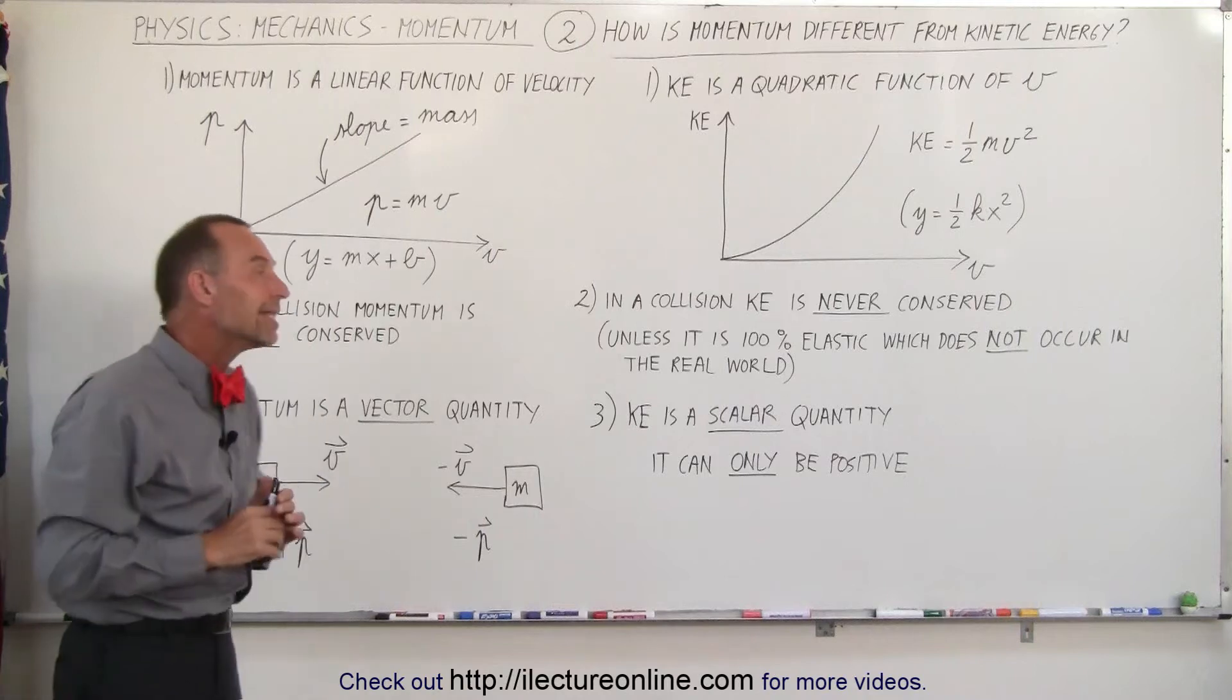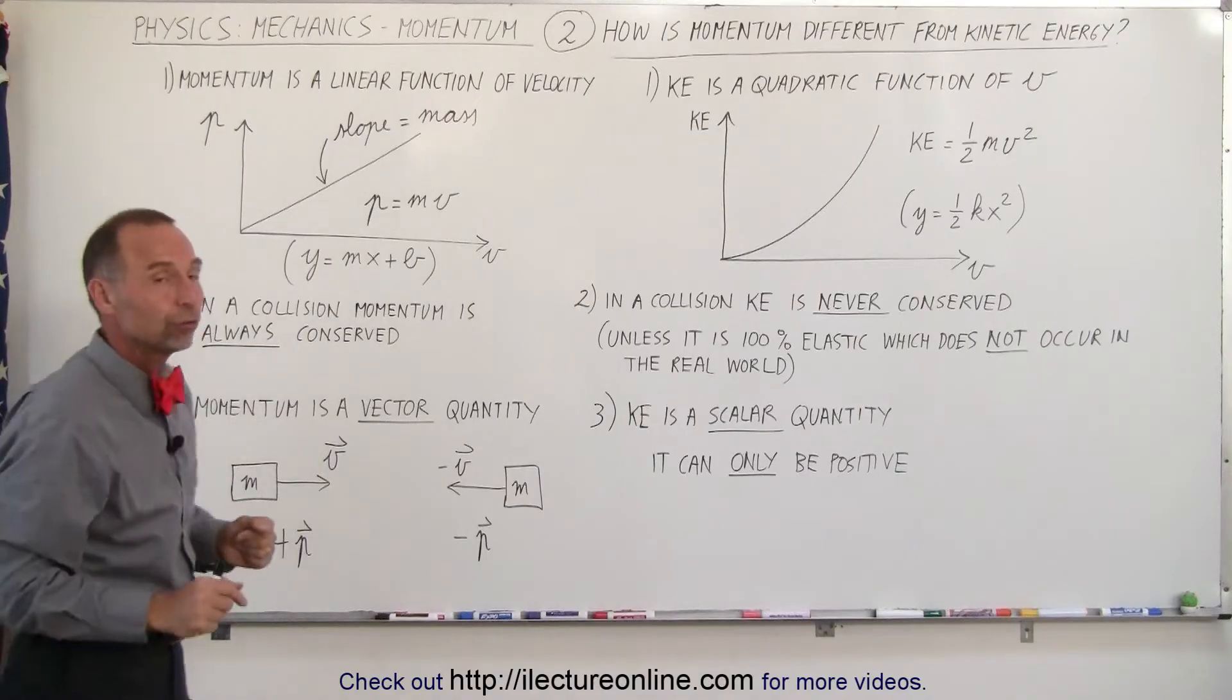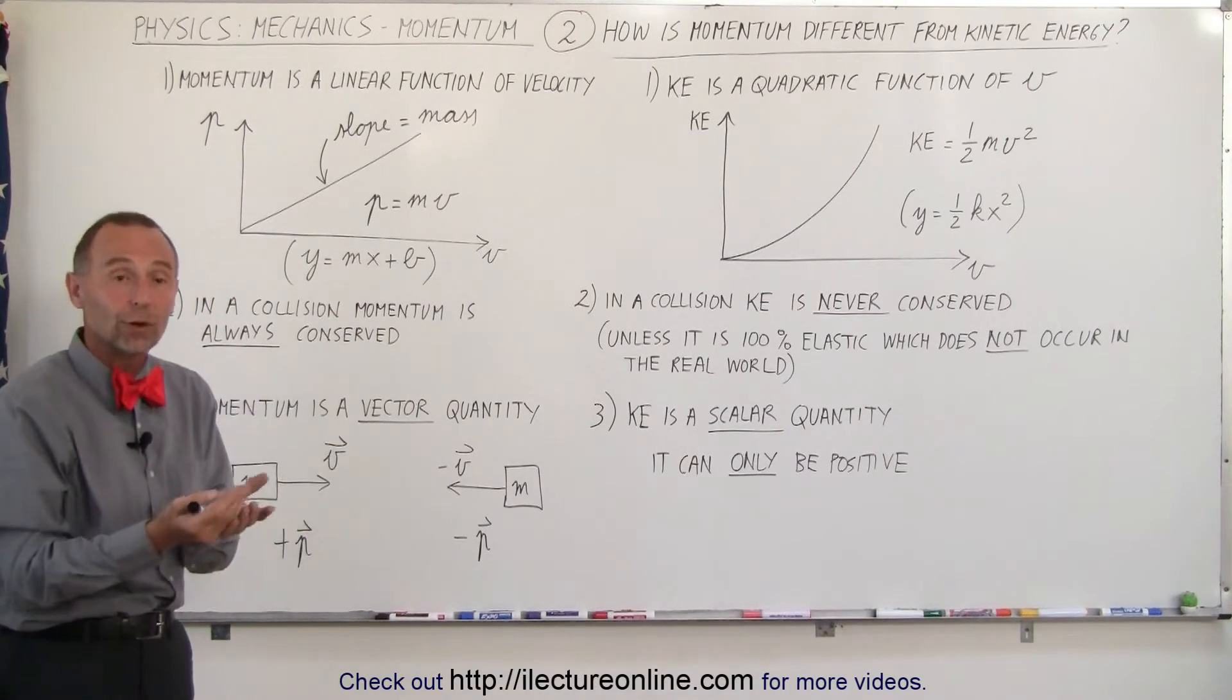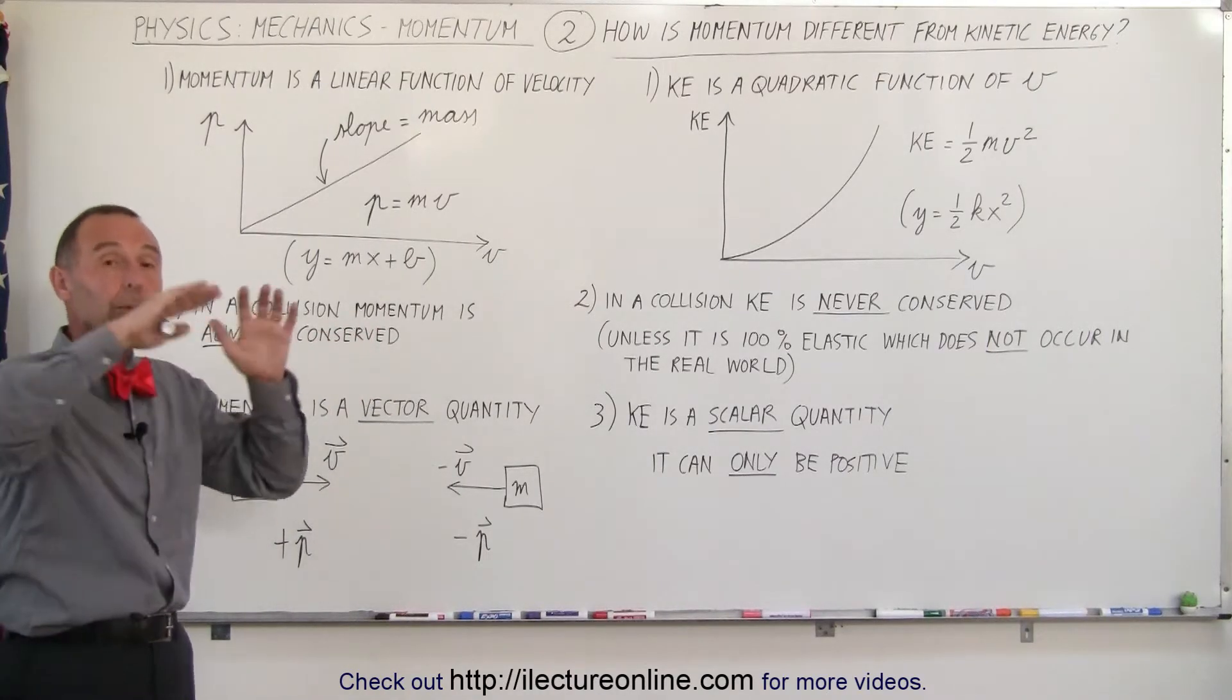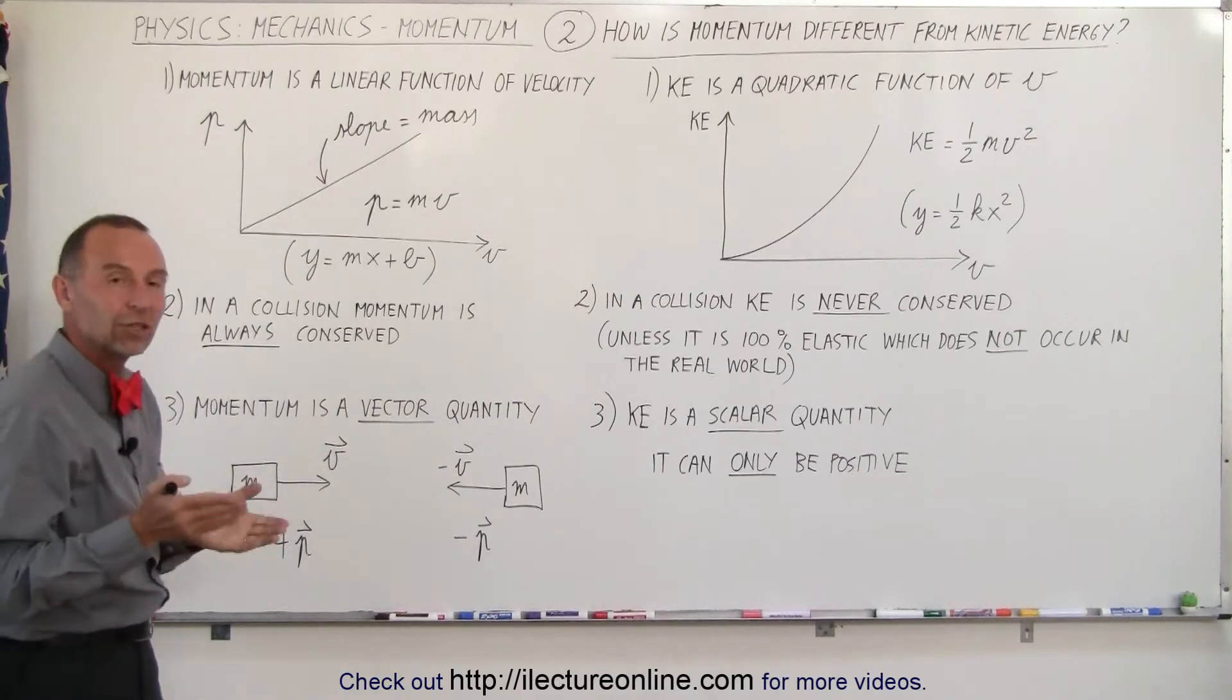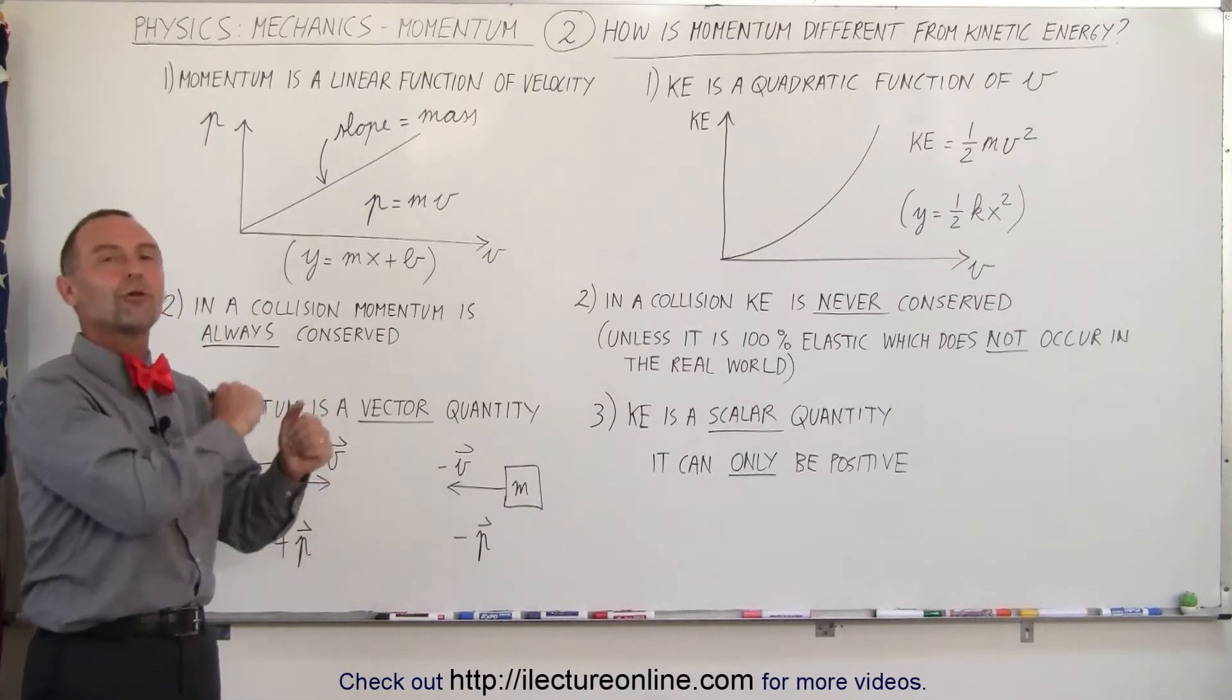The second main difference between the two is that in a collision momentum is always conserved. Just like we saw in the first video, whatever the momentum of the system was, the momentum of each individual piece of objects colliding with one another, when you add up all the momentum after the collision, you get the exact same momentum as you did when you add up all the momentum of the objects before the collision.